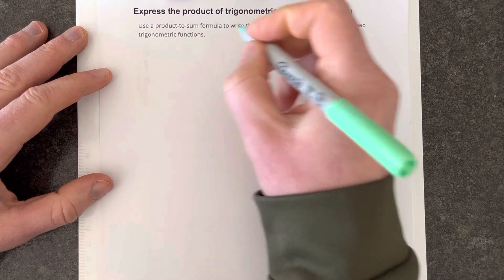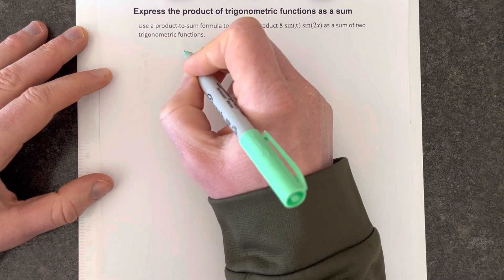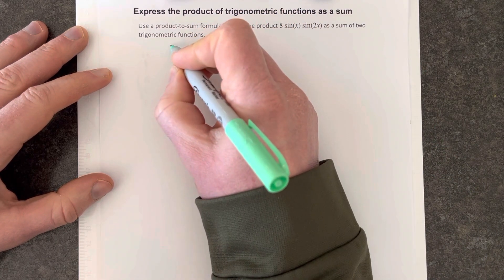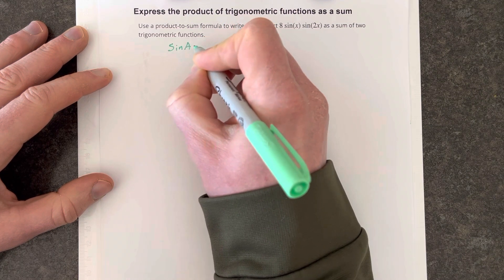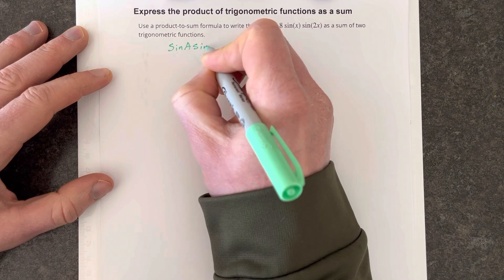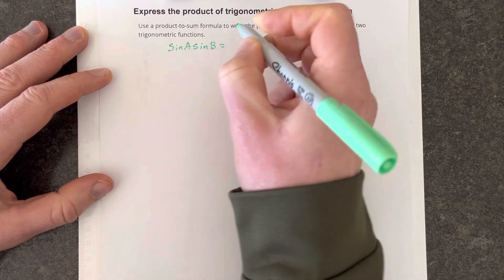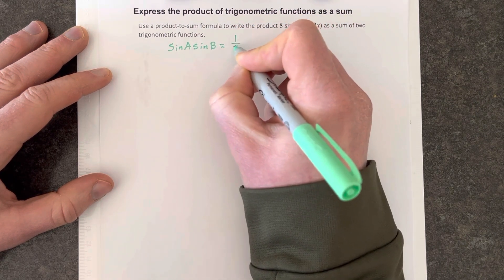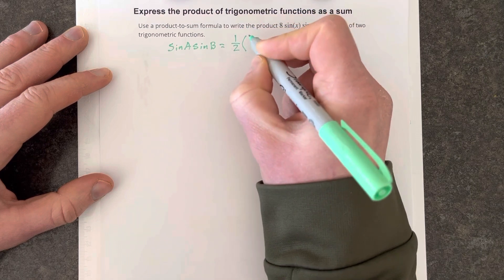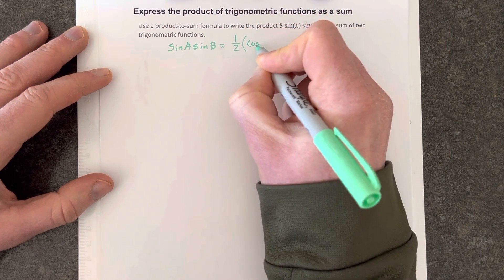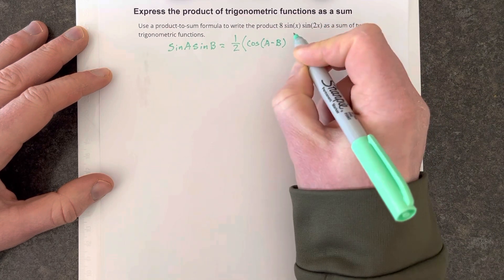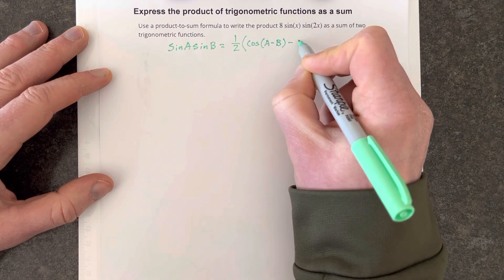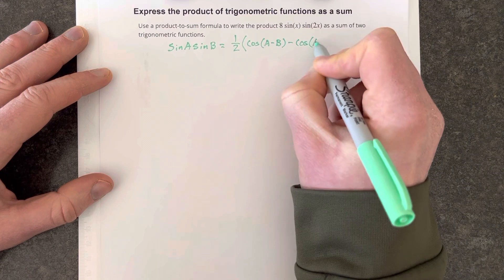So the first thing we're going to write out is what a product-to-sum formula looks like. We're going to say that sin of a times sin of b is equal to one-half times cosine of a minus b minus cosine of a plus b.